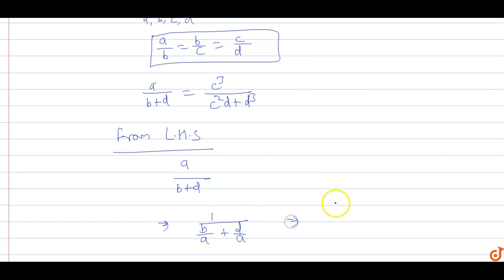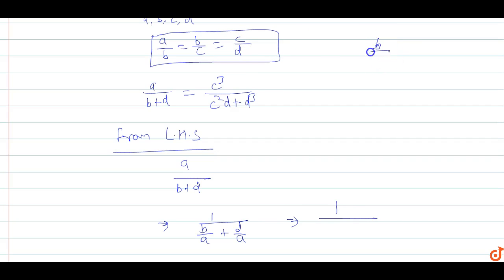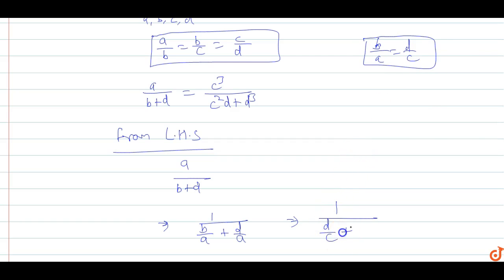This will become 1 upon B by A plus D by A. Now B by A equals D by C, because A by B equals C by D, so B by A is equal to D by C. These both are equal, so B by A equals D by C, plus D by A.